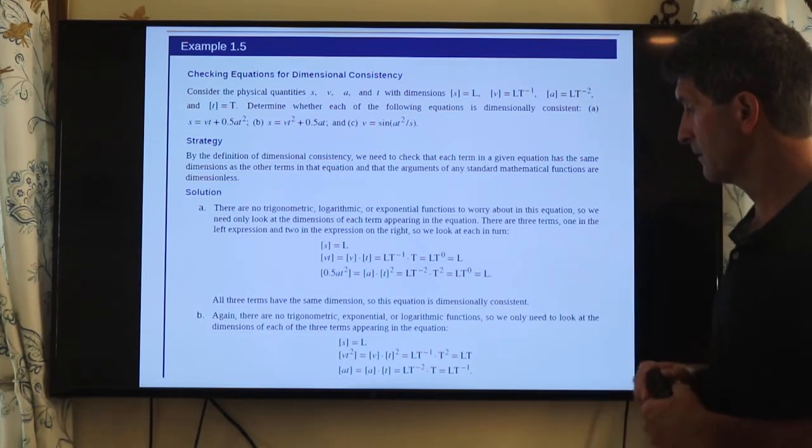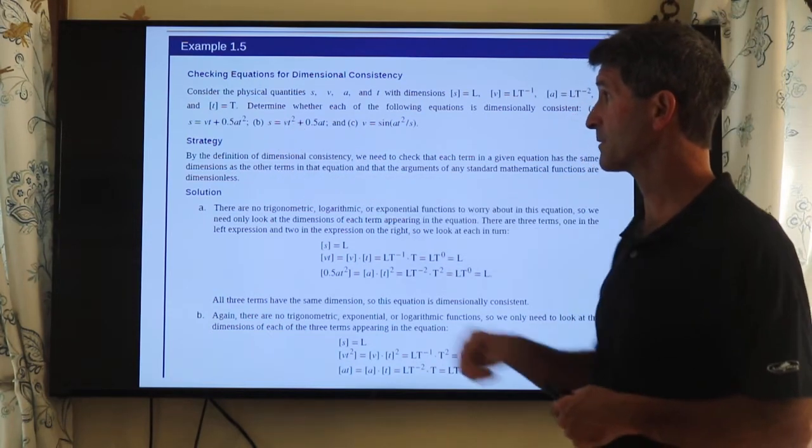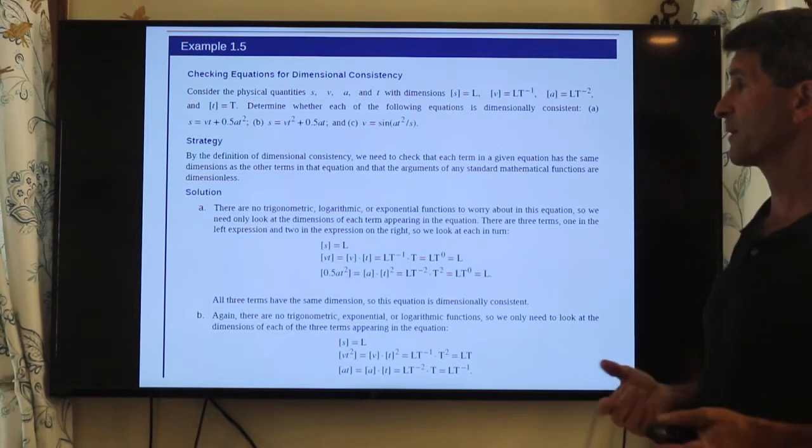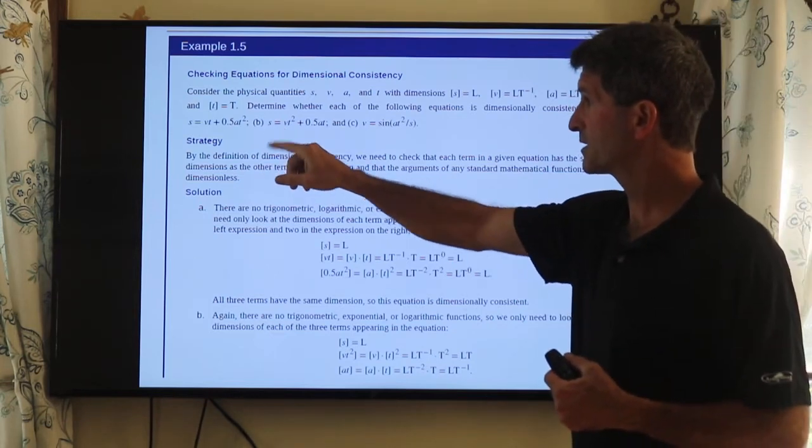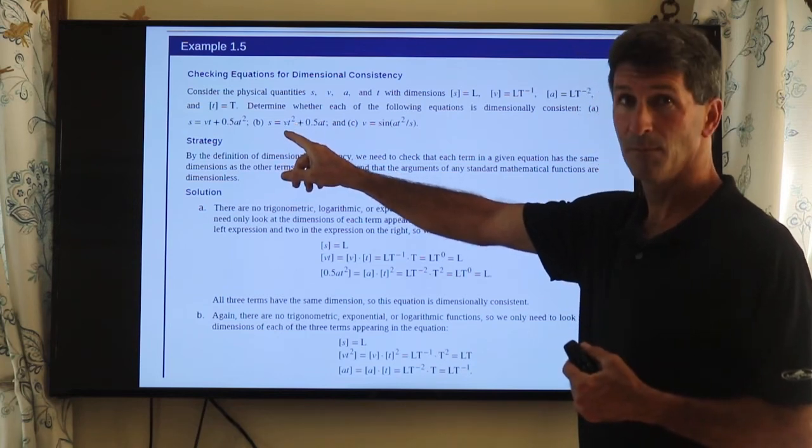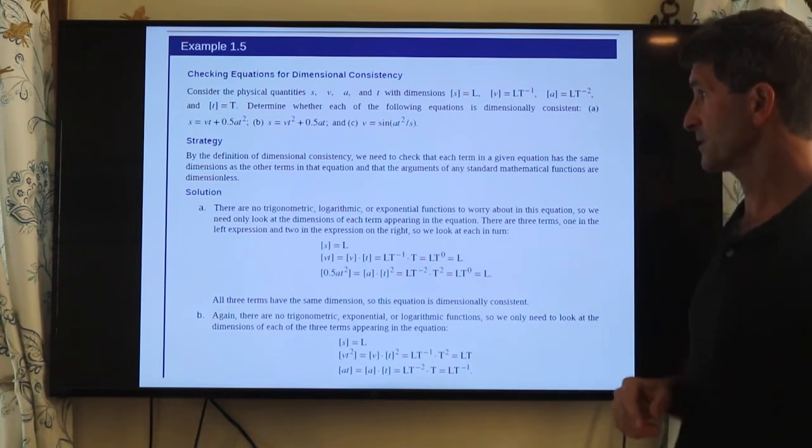We do it again for this other one. You have distance on this side, velocity times time squared. Well, you can see right off the bat, that's not consistent. On the left-hand side, you have distance. Here you have distance divided by time times time squared. That's distance times time, so that doesn't work.